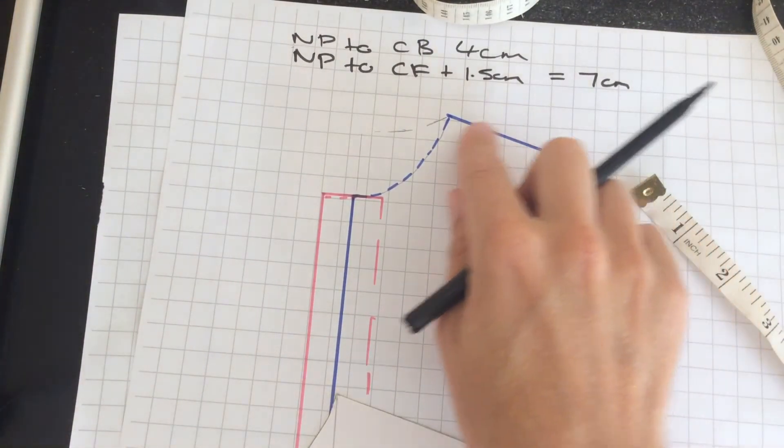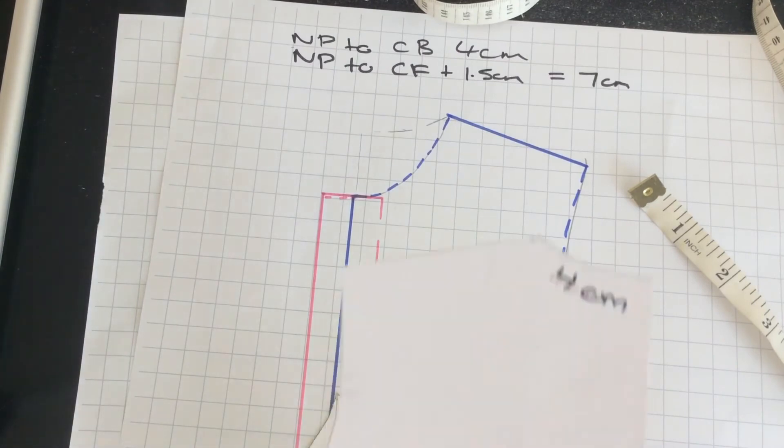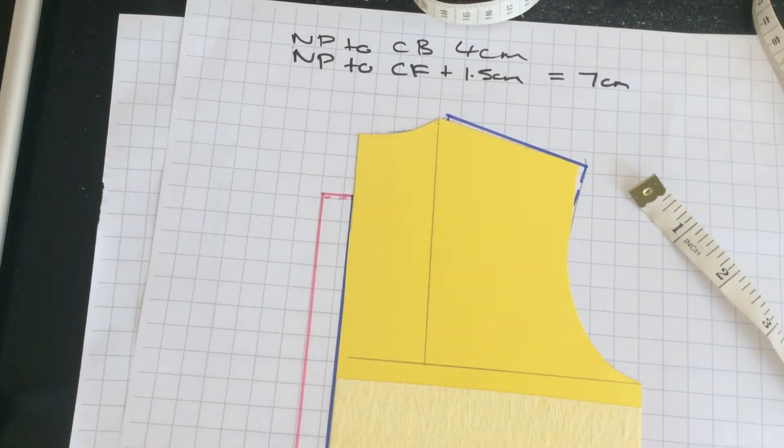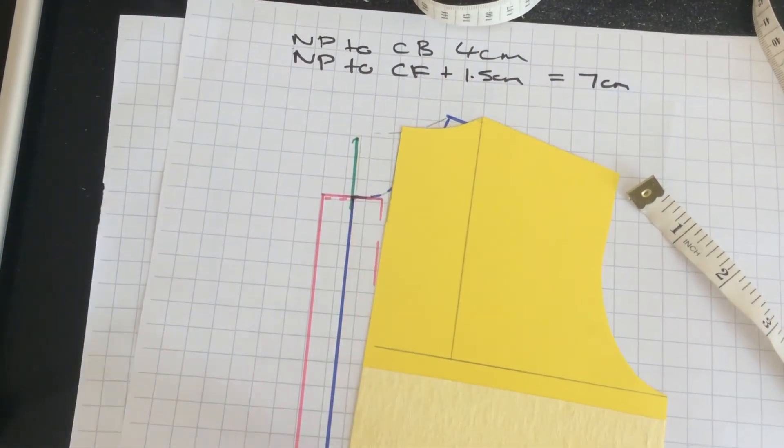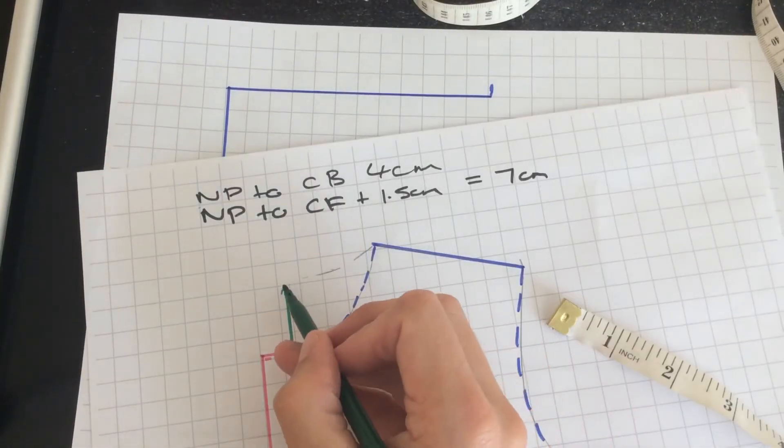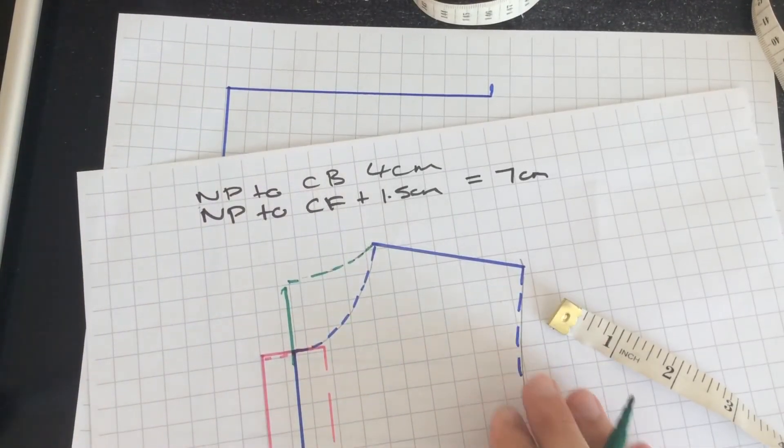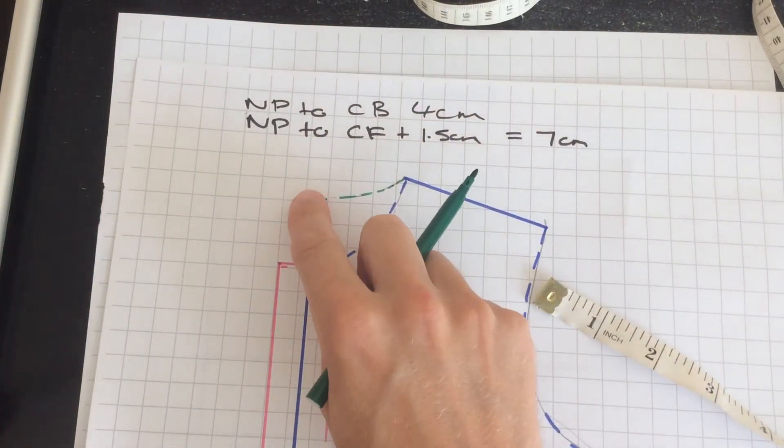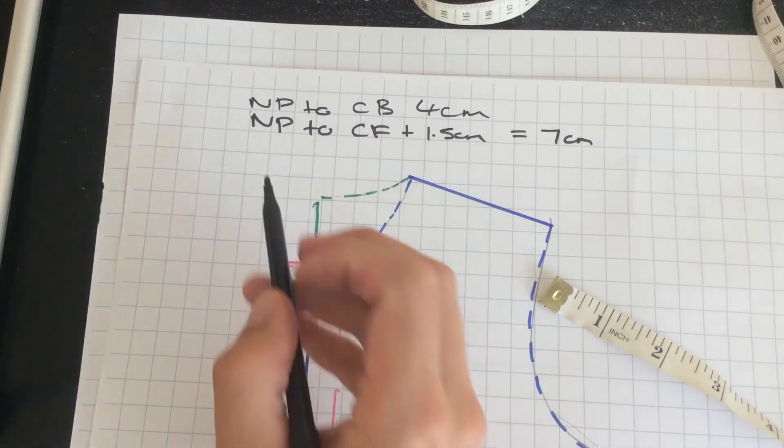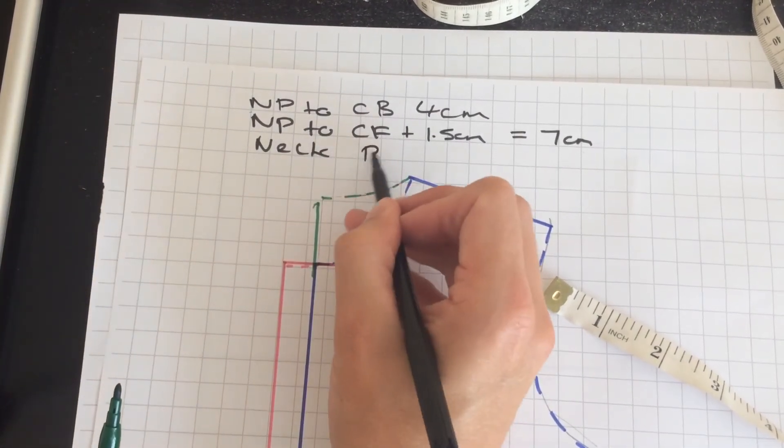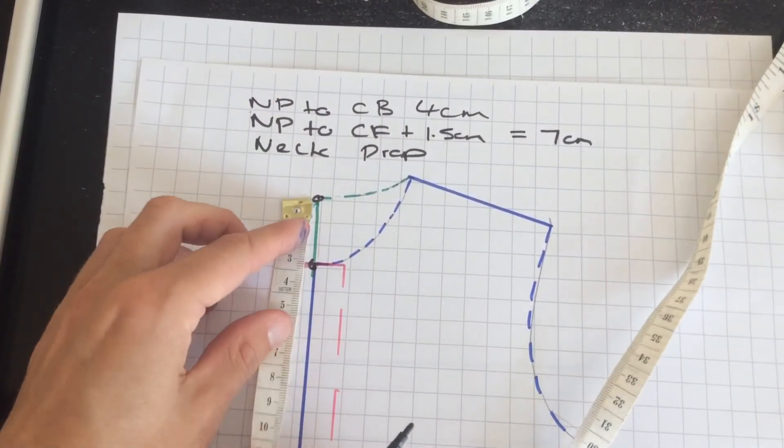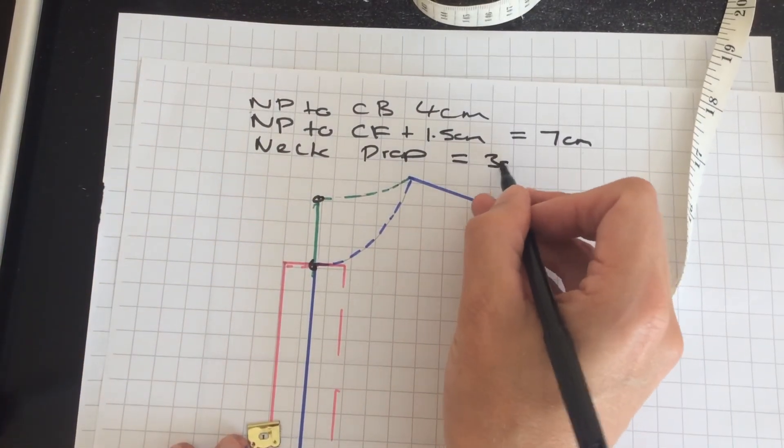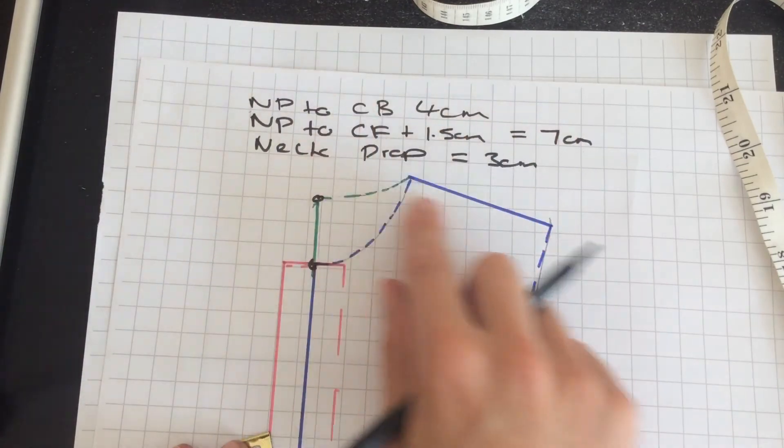Now you can start to see there's some dashed lines there, and what those dashed lines are is the back placed over the top. And what I'm going to do is I'm just going to actually draw it in now that I'm happy with that. And what this gives us is another measurement which is the neck drop. So from here to here, and that is going to be I think about three. Yes, that equals three centimeters. So those are some key measurements.